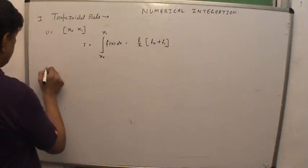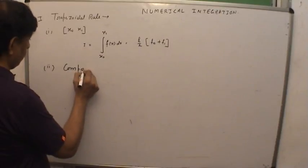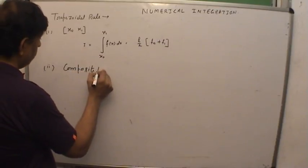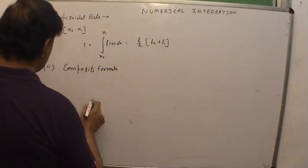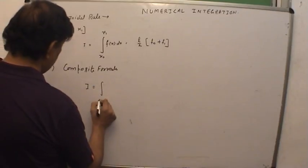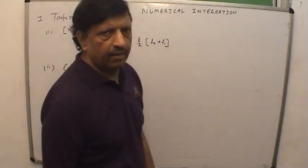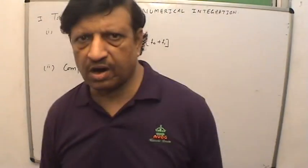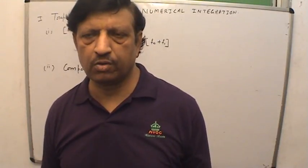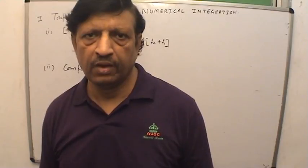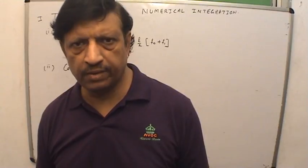This is called the simple formula. In the trapezoidal rule, the second formula is called the composite formula. In the composite formula, the integration changes from x0 to xn, meaning the integration may start from 1 and terminate at 3, 4, or 5, making different intervals according to the height of the given data.